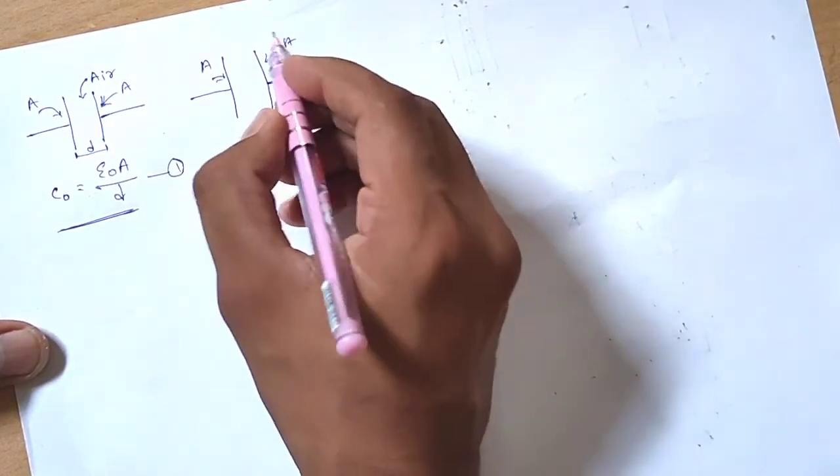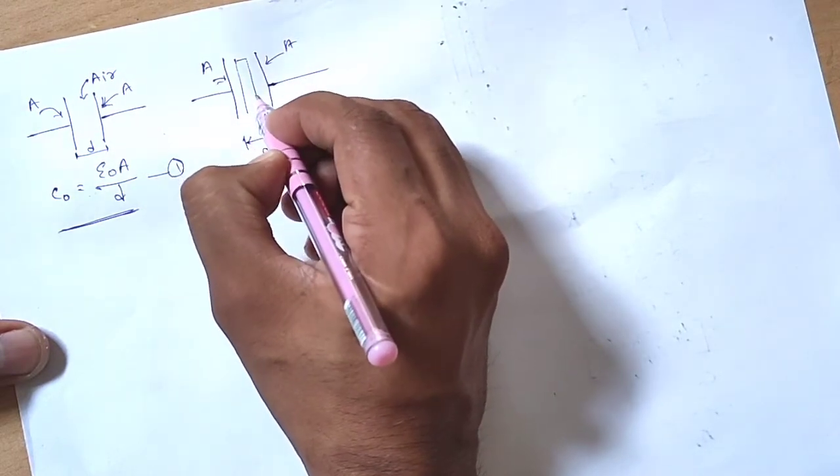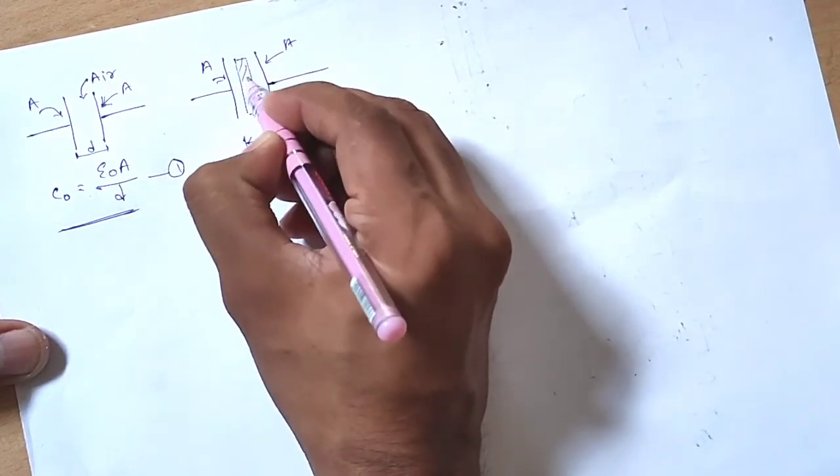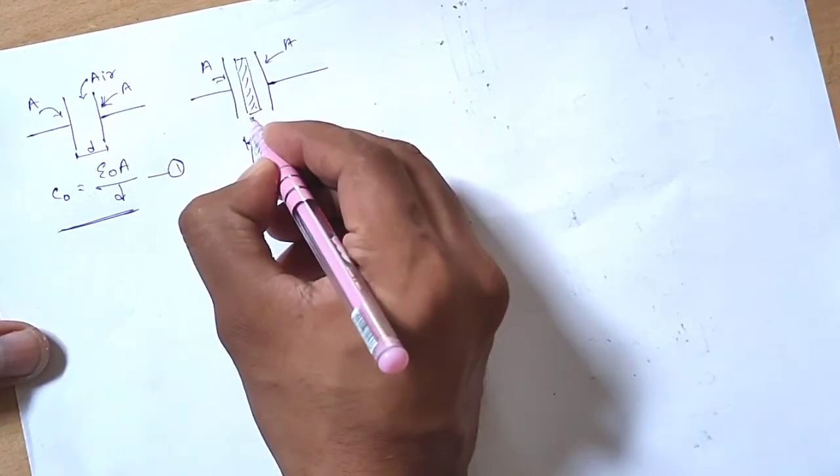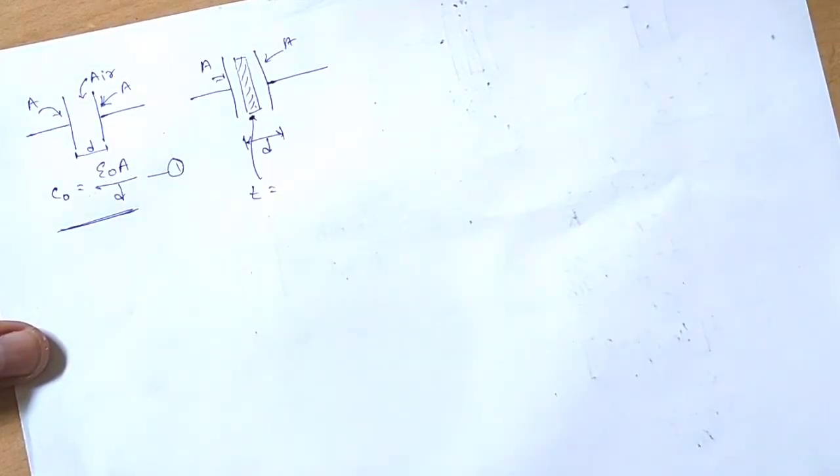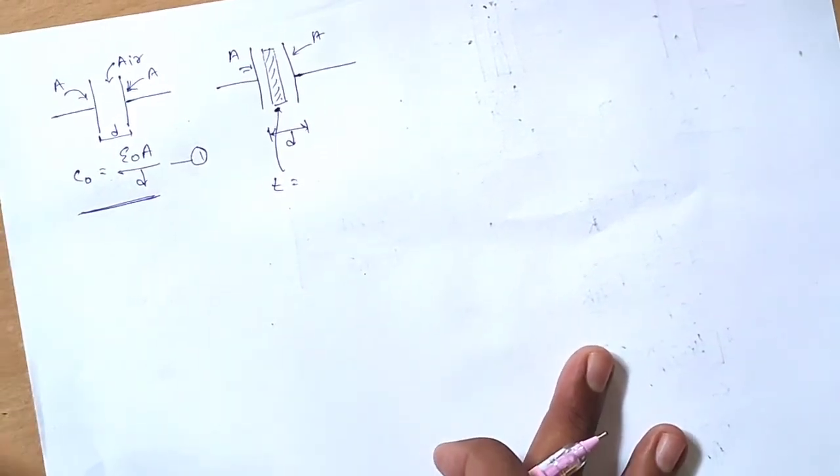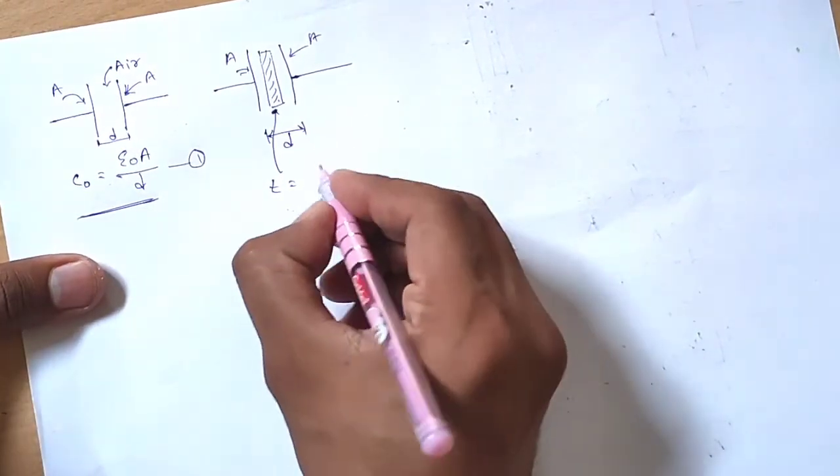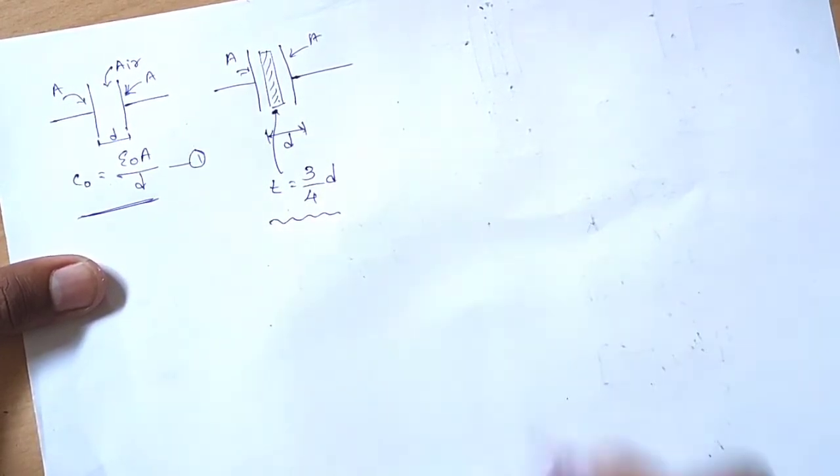But what is inserted in the parallel plate capacitor is a dielectric material. The dielectric material has thickness t equal to, according to the given data, 3d/4. The thickness of the dielectric constant material we have used is 3d/4.